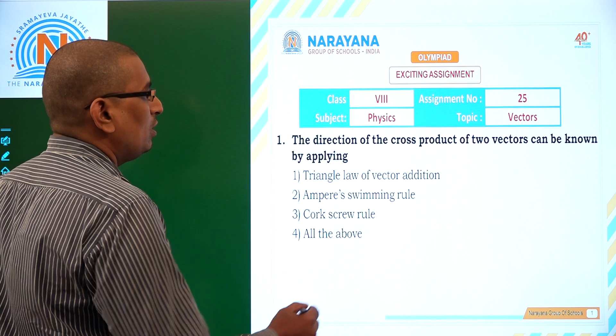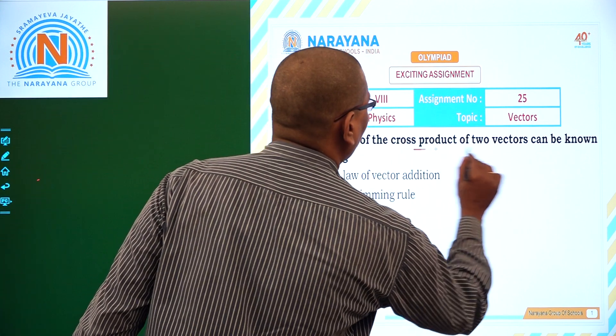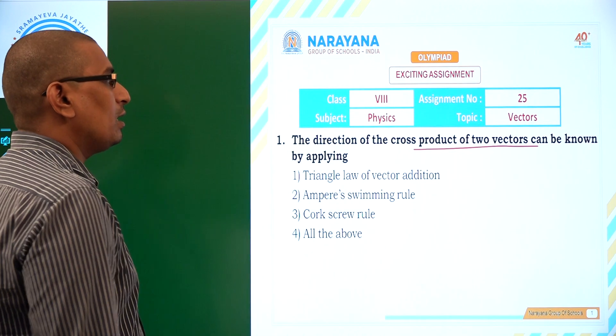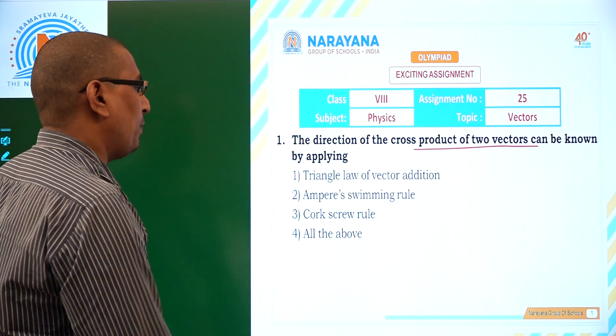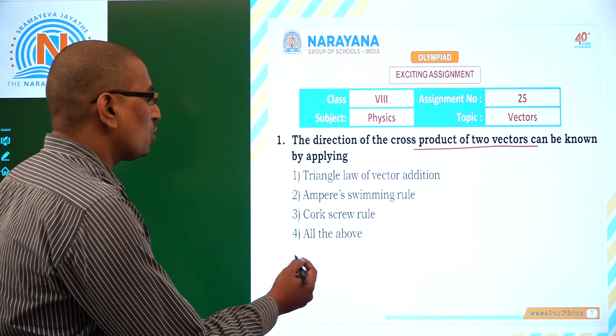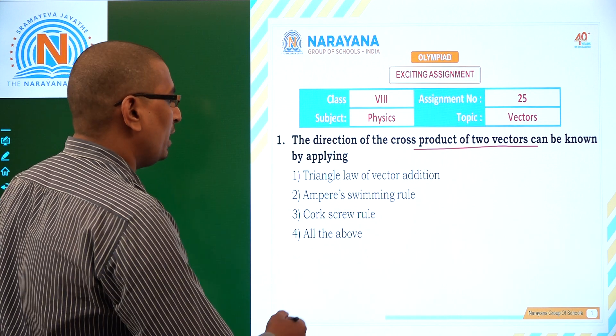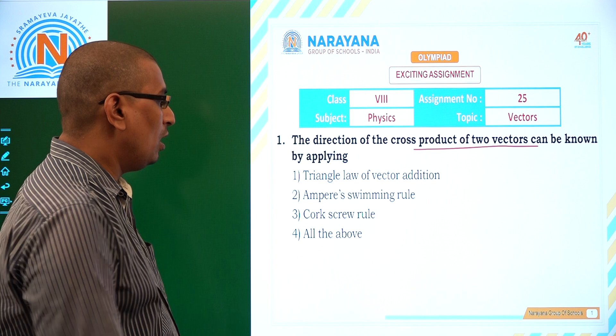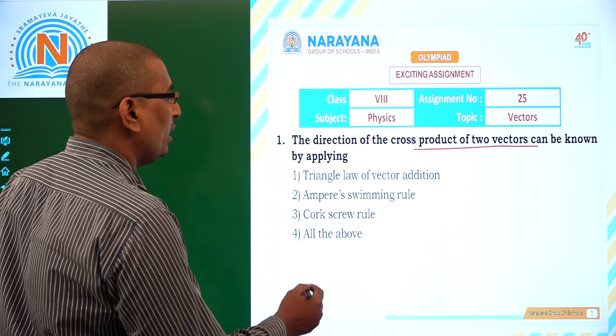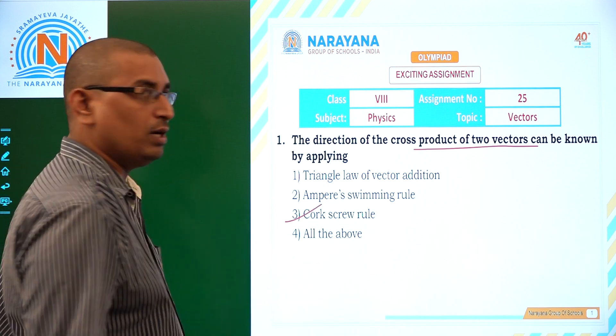The direction of the cross product of two vectors can be known by applying... So the direction of the cross product here, we apply using a corkscrew rule. There is option number 3.